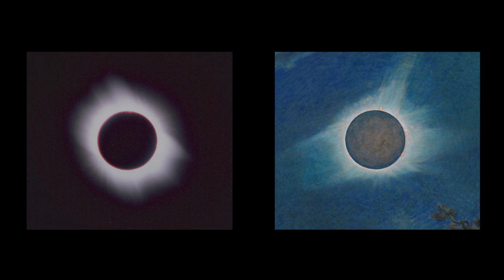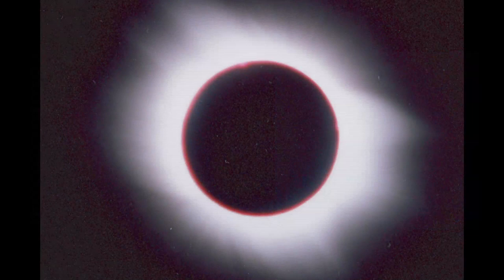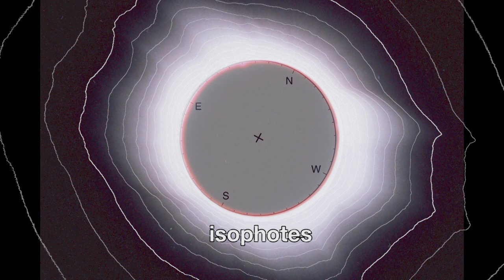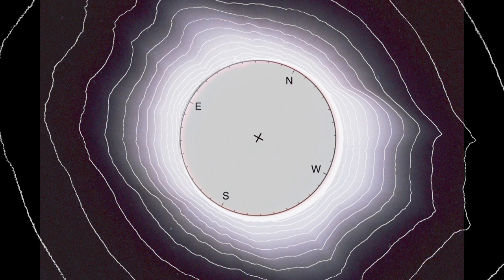Why are the distributions we photograph different from what we see? Although white light images seem to display the distribution of brightness, the true distribution can only be defined by quantitative measurements. One quantitative representation is isophotes — contours along which brightness is constant, like the elevation lines on a map. By relating images to isophotes, we can determine whether they represent the true distribution.